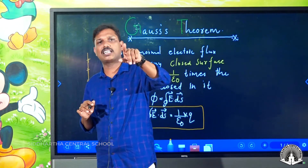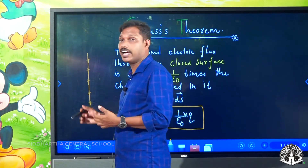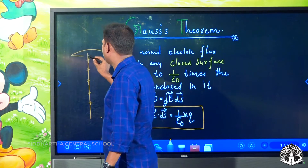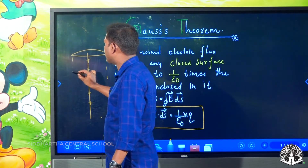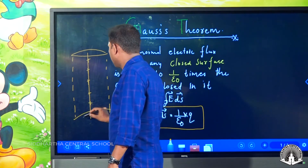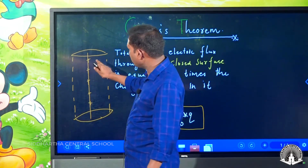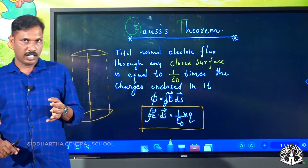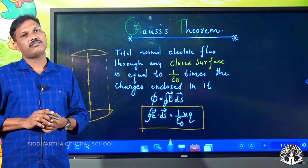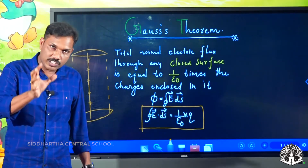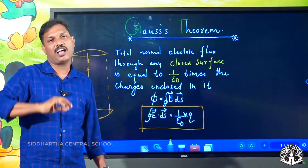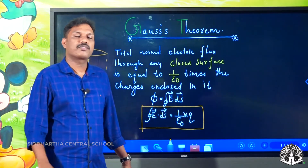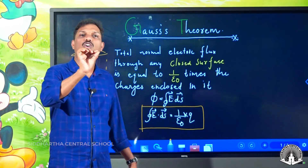This is how much electric flux the conductor has. The closed surface here is a closed imaginary surface. In the case of Gauss theory, the Gaussian surface is closed to that surface. If you consider Gauss, the name of that surface is Gaussian surface.